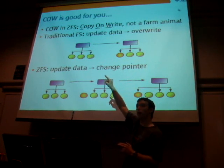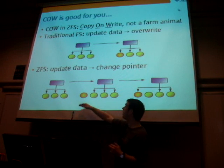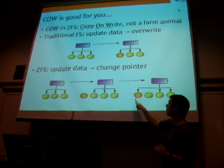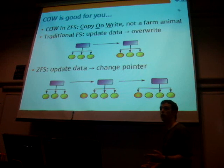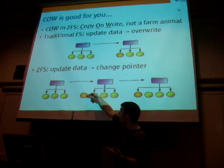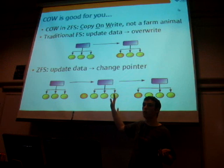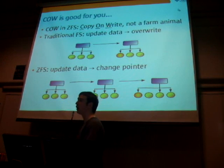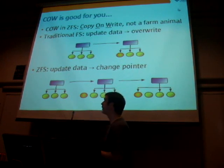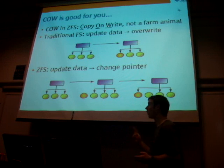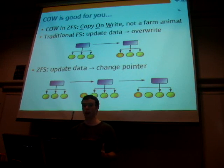Instead of writing over data in place, ZFS writes to a new block and gets all the data there. That new block isn't in the file system yet because nothing's pointing at it. Then, in a single atomic operation, it changes the pointer in the file's inode to point at the new data. This means if you lose power halfway through writing, the original data is still intact. Everything in ZFS does this — updating inodes, creating new files, calculating parity. Everything is based around copy-on-write semantics, giving you real confidence that a power loss won't leave your file system in an inconsistent state.